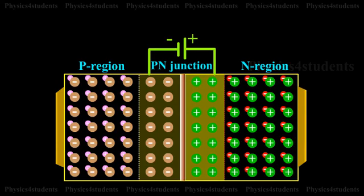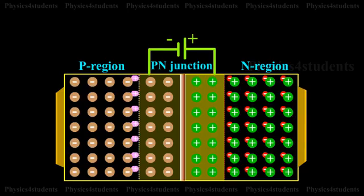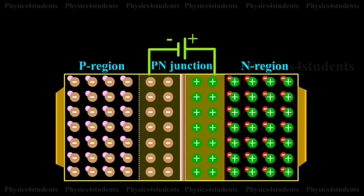Similarly, holes in the P side find themselves at a lower potential and are prevented from crossing to the N side. Thus there is a barrier at the junction which opposes the movement of the majority charge carriers.